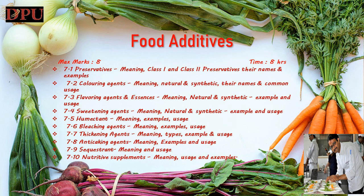Number 5, humectant — its meaning, examples and usage. Number 6, bleaching agent — its meaning, examples and its usage. Number 7, thickening agents — its meaning, types, examples and its usage. Number 8, anticaking agents — its meaning, examples and its usage. Number 9, sequestrant — its meaning and usage. Number 10, nutritive supplement — its meaning, usage and examples.